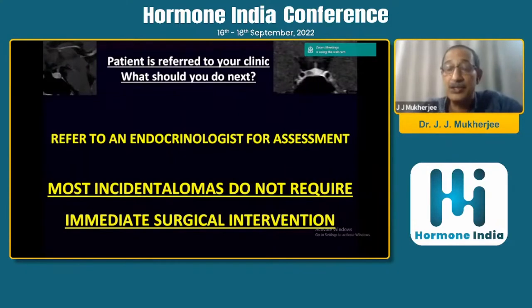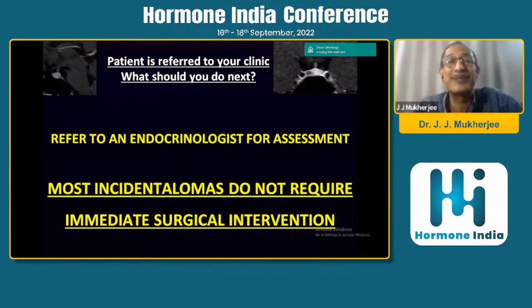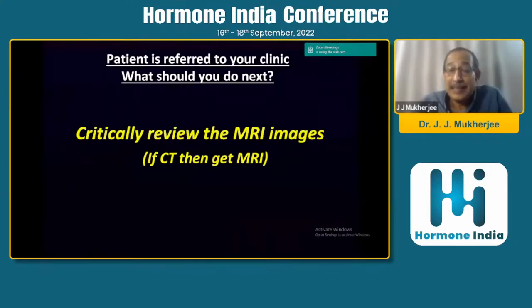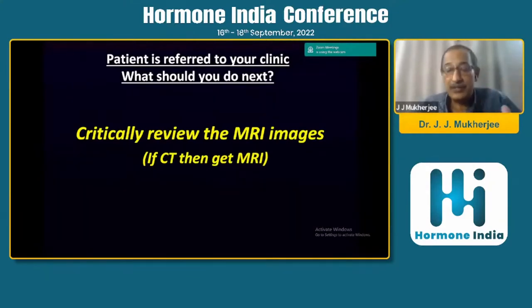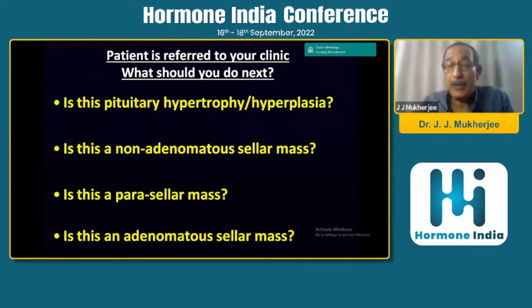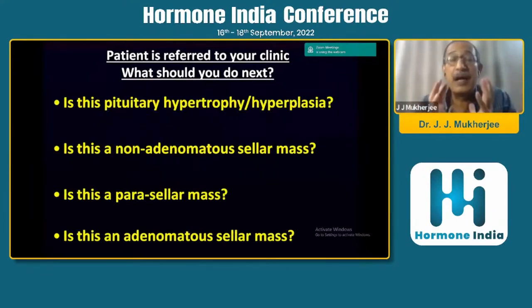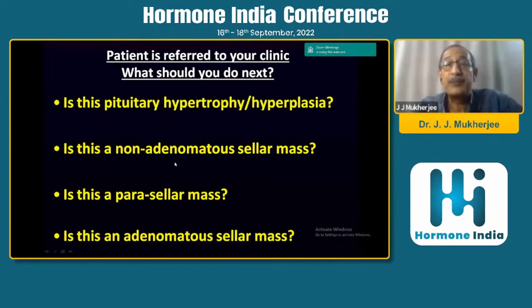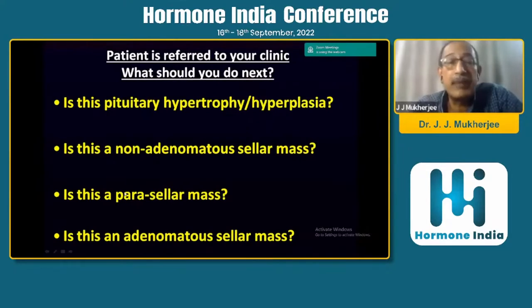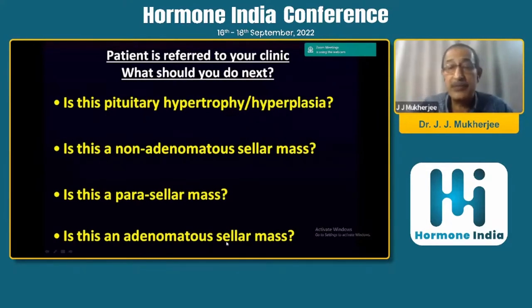My last slide will give you the indications for surgical intervention in an incidentally detected pituitary lesion. The second thing is to critically review the MRI, because an incidentaloma does not always mean an adenoma. Is it pituitary hypertrophy or hyperplasia? Is it a non-adenomatous sellar mass? Is it a parasellar mass? Or is it an adenomatous sellar mass?